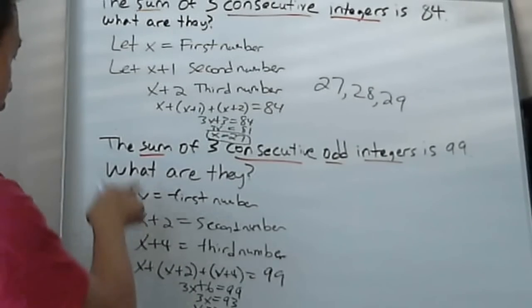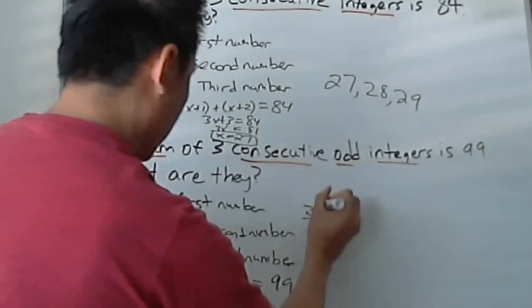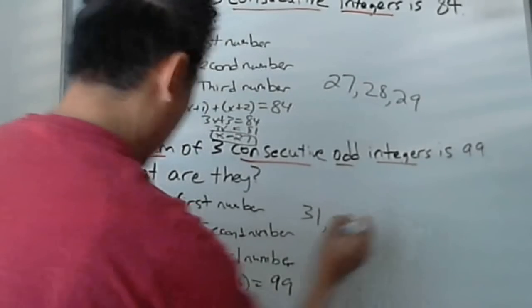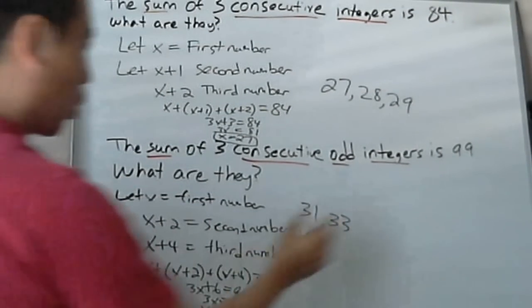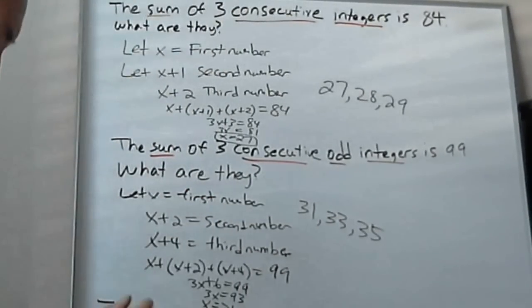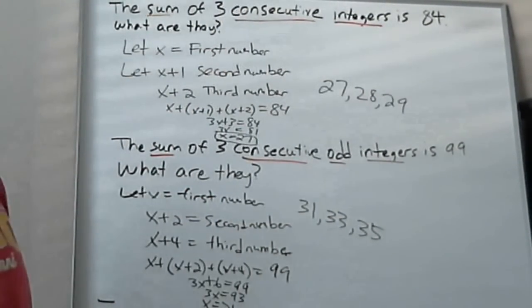And then if x is the first number, x is the first number. Second number has to be x plus 2, so you add 2 to that, so you get 33. 31 plus 4 will be 35. And that's how you do these word problems.